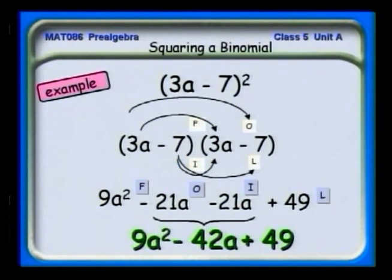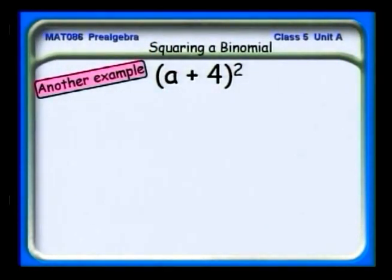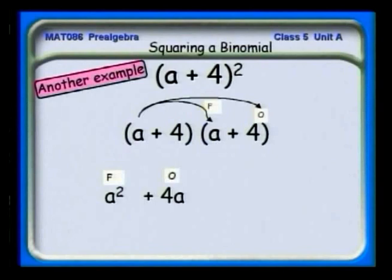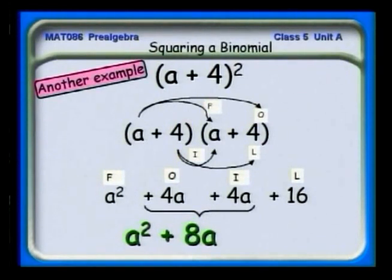Notice — see if you can see a pattern developing. Let's look at another one: (a + 4) squared. We're squaring a binomial, and again we'll use the FOIL method. The first terms give a squared. The outer terms give 4a. The inner term gives 4a. The last terms give 4 times 4, or 16. When we combine like terms, we get double the first times the last of the binomial, so the result is a squared plus 8a plus 16.